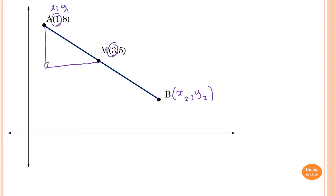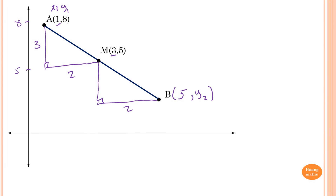From x1 = 1 to the midpoint x = 3 is 2 units. Since M is the midpoint, the triangle on the other side is the same, so x2 = 3 + 2 = 5. For the y value: from y1 = 8 down to the midpoint y = 5 is 3 units. So from midpoint y = 5 down another 3 units gives y2 = 5 - 3 = 2. So B = (5, 2) by inspection.